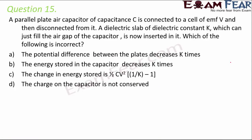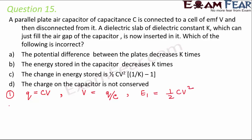Question number 15: a parallel plate air capacitor of capacitance C is connected to a cell of EMF V and then disconnected. A dielectric slab of dielectric constant k, which can just fill the air gap, is now inserted. Initially, with air between the plates: charge Q = CV, potential difference V, and energy stored = ½CV².